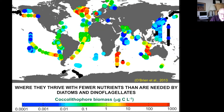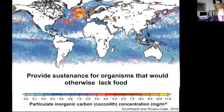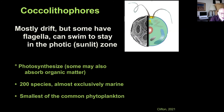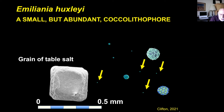All these factors together mean coccolithophores provide sustenance for organisms that would otherwise lack food — in areas where you don't get big blooms of dinoflagellates or diatoms. They are mostly drifters, but some have flagella to swim and stay in the photic zone. The most common in the sea is the small, simple Emiliania huxleyi — you can see how tiny it is, but it's a very abundant coccolithophore responsible for a large bloom in 1998.